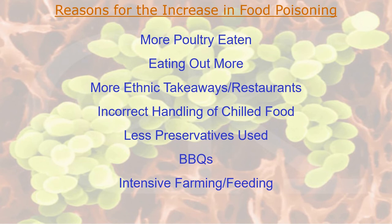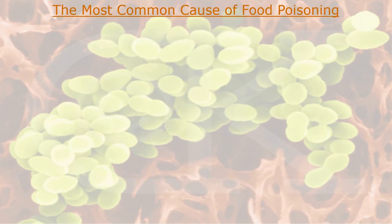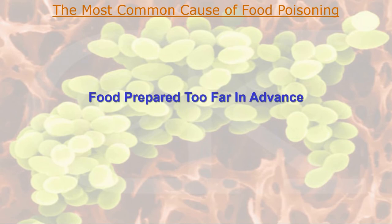The last reason is intensive farming and feeding. For example, 14 chickens in a square metre is intensive farming. Farmers also use supplemental feeds to get their animals to market more quickly, and many of these feeds are not sterilized — therefore the feeds themselves can contain different bacteria, parasites, and other fungal diseases. The most common cause of food poisoning — and a question could come up asking you this — is food prepared too far in advance.